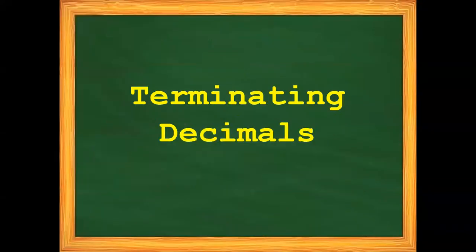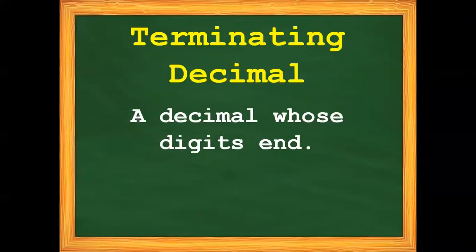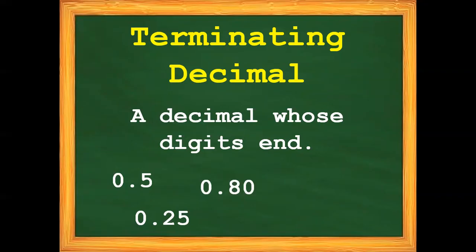What is a terminating decimal? A terminating decimal is a decimal whose digits end. For example: 5 tenths, 25 hundredths, 80 hundredths, 1 and 125 thousandths, and 9 and 75 hundredths.